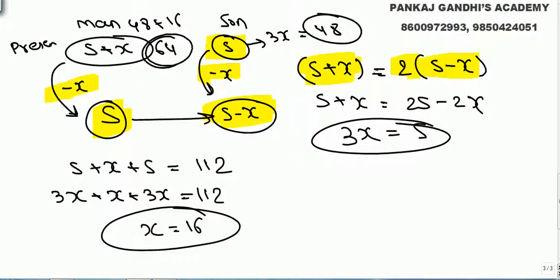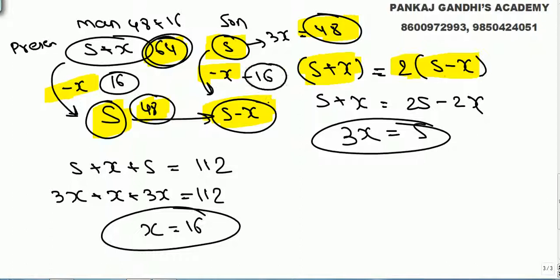Cross-check: son's present age is 48, man's is 64. When man was 48 years old — that is 16 years back — son was 32. Man's present age 64 is twice of 32. Verified.